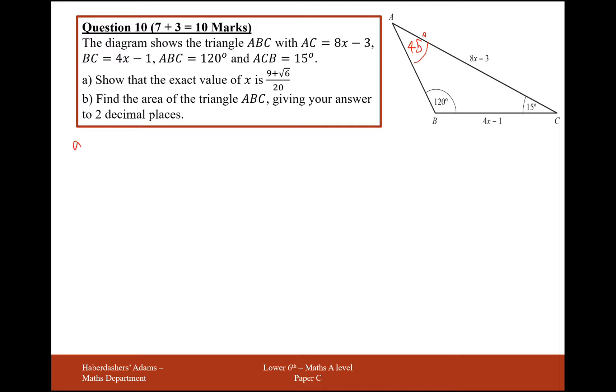So what I'm going to do here is, if we want to work out x, I'm probably going to want x on the top of my formulas. So I'm going to have 8x minus 3 over sine of 120 equals 4x minus 1 over sine 45. Sine of 120, it does say exact value, so I do need to find the exact value of sine of 120.